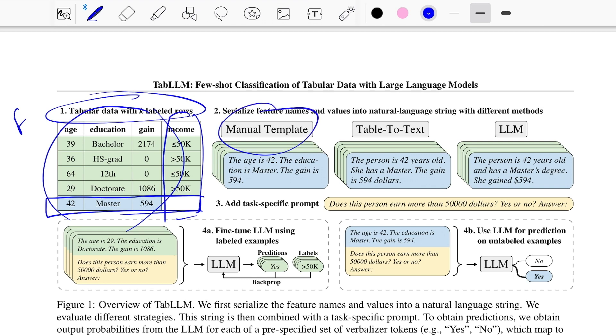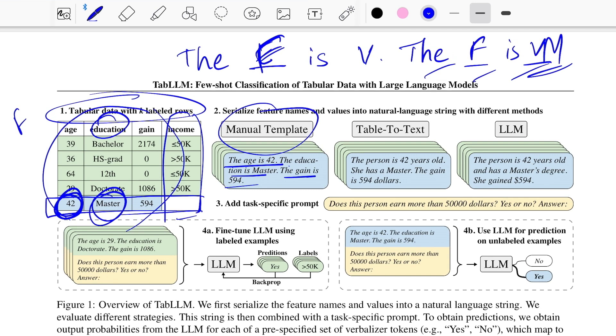If we talk about manual templating, the serialization can look something like: the age is 42, the education is master, the gain is 594. The template looks like 'the F is V', where F is a feature like age and V is the value like 42. So the age is 42, the education is master, and so on. The other is table-to-text. You can use a table-to-text model that does a more natural way of converting these into readable format rather than something that looks repetitive and formatted. This one could say 'the person is 42 years old, she has a master, the gain is 594 dollars.'